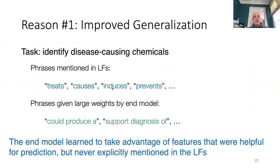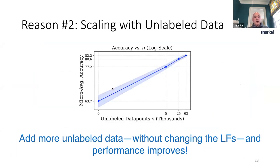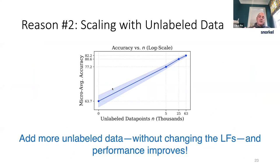A second thing it can do is scale with unlabeled data — that is really exciting. You feed in more unlabeled data and more labels come out. This is just a schematic plot from a real experiment: as you put in more data, it is actually scaling, substantiating that faster and cheaper claim. Training signal is really key to pushing the state of the art in a lot of different areas.